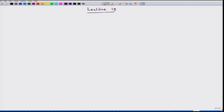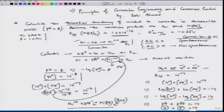So, in the last lecture we started discussing nickel corrosion. The problem statement was: we need to calculate the theoretical tendency of nickel to corrode in de-aerated water at pH 8. Assume that the corrosion products are H₂ and Ni(OH)₂. The data given are temperature 298 Kelvin, pressure 1 atmosphere, solubility product of nickel hydroxide is 1.6 × 10⁻¹⁶, and standard reduction potential of nickel is −0.25 V.